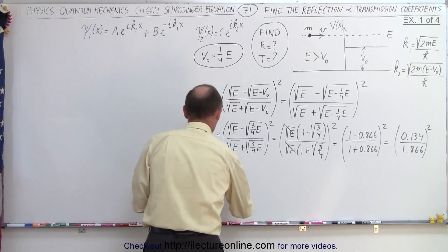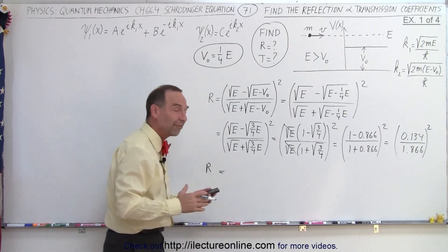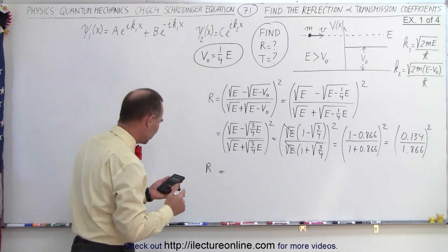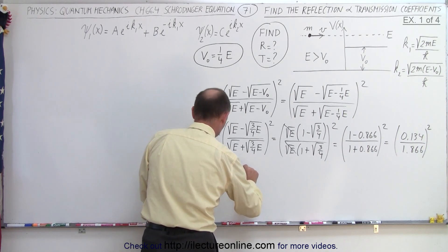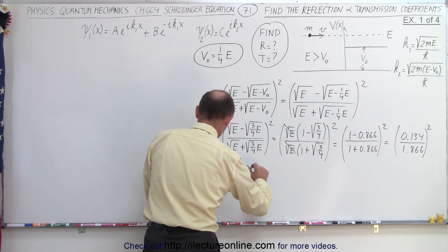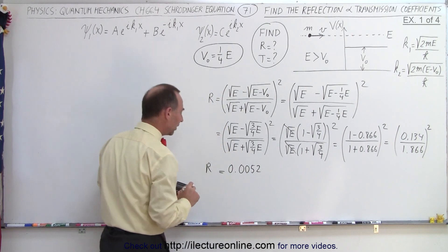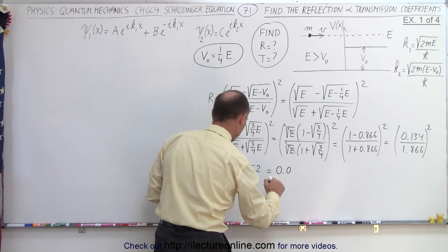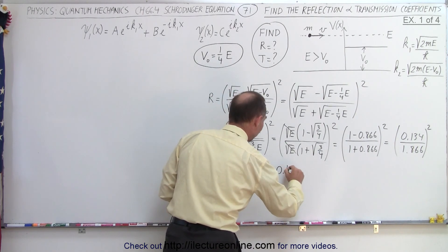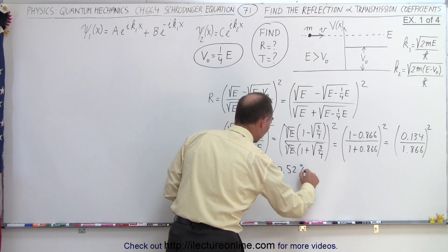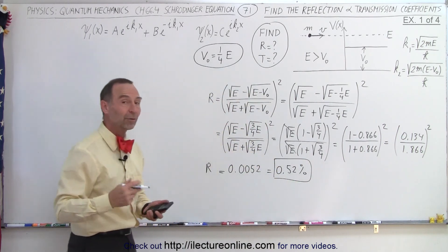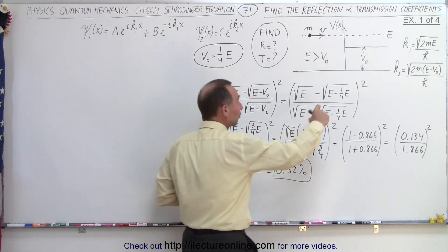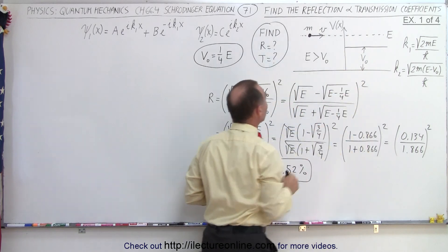This is the reflection coefficient — the fraction of particles that will actually be reflected off that potential step — and it's 0.0052, or to two decimal places, 0.52 percent. So slightly over half a percent of the particles will be reflected off that potential step, even though the potential step is one quarter the value of the total energy.